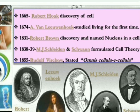Then in 1838 to 1839, Schleiden and Schwann gave the cell theory. They told that all plants and animals are composed of cells, and cell is the basic unit of life. This was the cell theory given by Schleiden and Schwann.